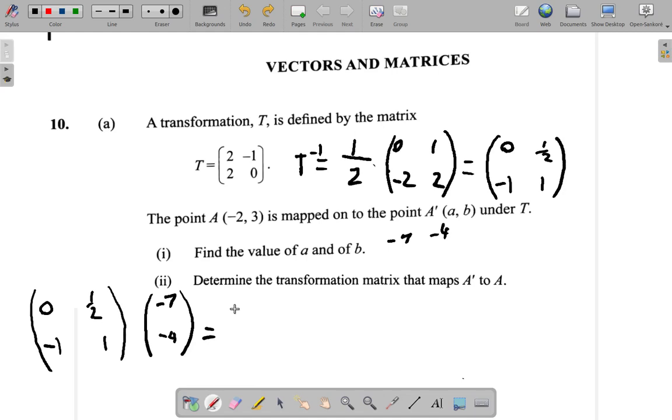Remember again, you're multiplying row by column. First element in row times first element in column, plus second element in row times second element in column. So first by first, it's going to be 0 times negative 7, which is 0, plus half by negative 4, which is negative 2. And down here, negative 1 times negative 7, first by first, negative 1 times negative 7 gives you 7, plus 1 times negative 4 is negative 4. So the answer here is 0 plus negative 2 is negative 2, 7 minus 4 is 3. Is that A?